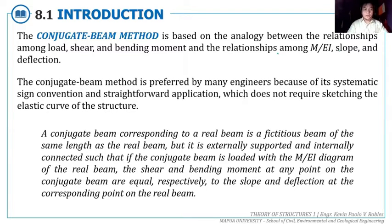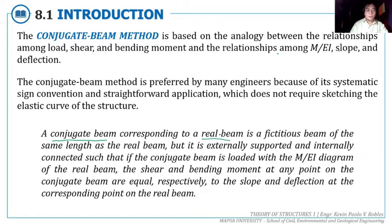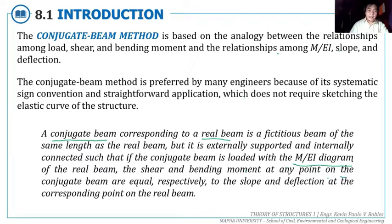The conjugate beam corresponding to the real beam is a fictitious beam with the same length as the real beam, but it is externally supported and internally connected such that if the conjugate beam is loaded with the M/EI diagram — meaning we draw the moment diagram of the real beam — the shear and bending moment at any point on the conjugate beam are equal respectively to the slope and deflection at the corresponding point on the real beam.